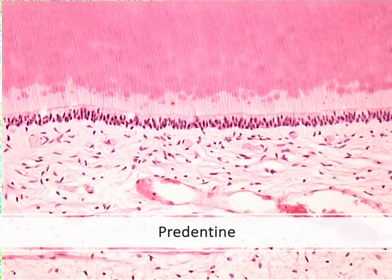The last layer above the pulp is called the predentine, which is the first layer secreted by the odontoblasts that lie in the pulp. This is the collagen matrix before it mineralizes, which is why it appears lighter in color. You can see the calcospherites or globules beginning calcification, and as they progress toward the dentino-enamel junction they continue this calcification process.